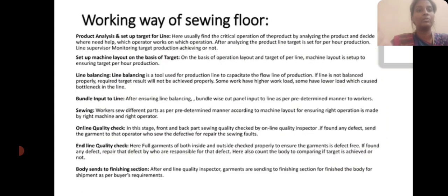Working way of sewing floor. Product analysing and set up target for line — find the critical operation of the product. By analysing the product and where help is needed, the operator works on that operation. After analysing the product, the line target is set for the production line. The supervisor monitors whether the target production is achieved or not.